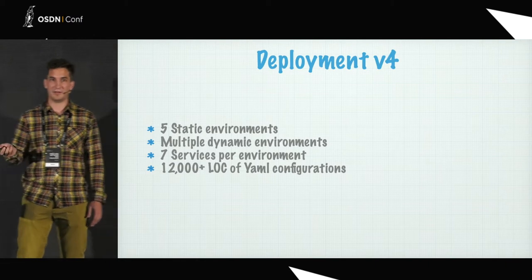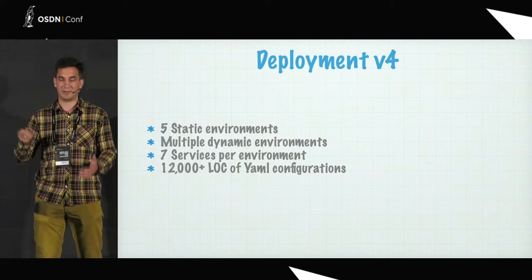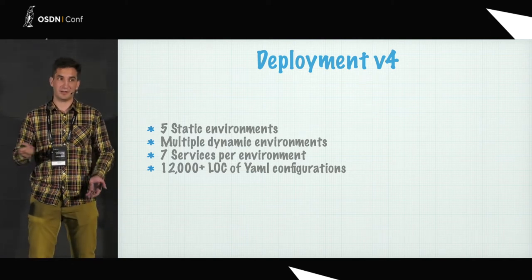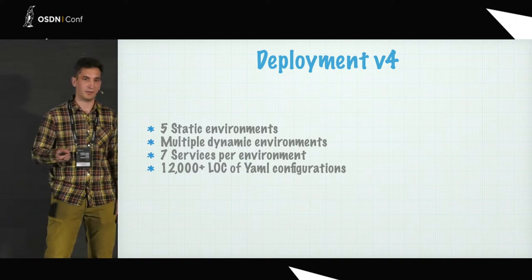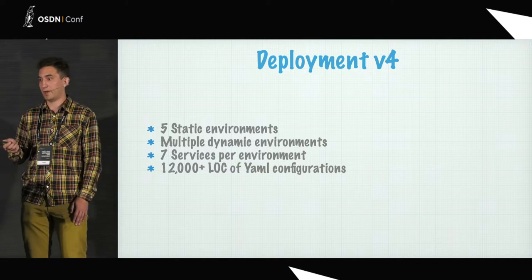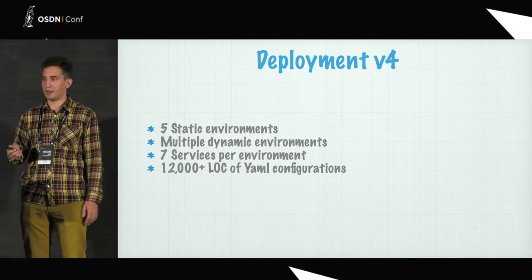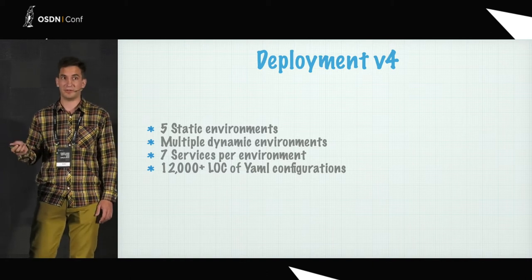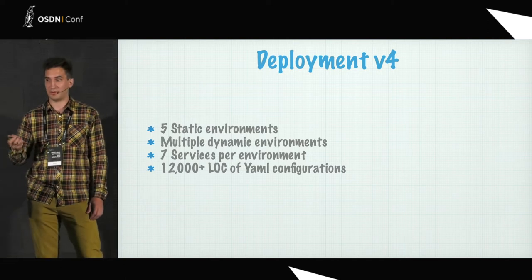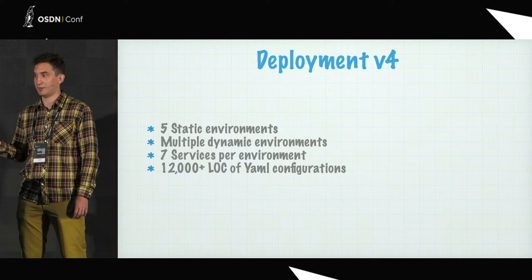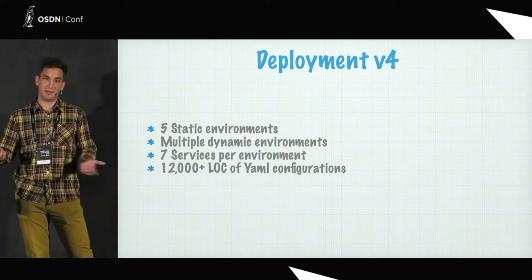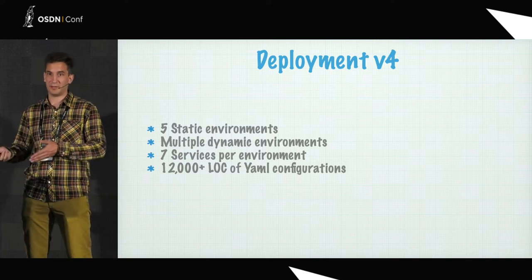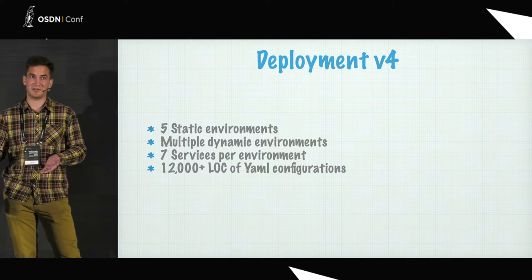We had five static environments and multiple dynamic environments for feature branches. We had up to seven services running on each environment, and all in all it was more than 20,000 lines of YAML configs, and they were very hard to manage. In the worst case, when we needed to add a new mandatory variable to a service, it required changing up to 40 different files across four different repositories. It was very hard to code review and hard to test and verify, and some issues we didn't see for quite a long time.